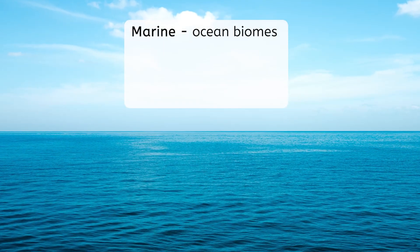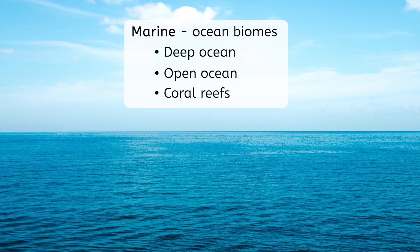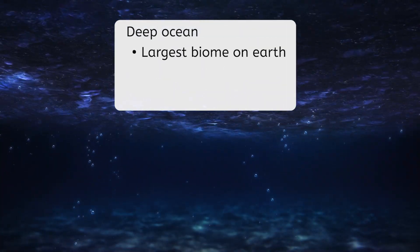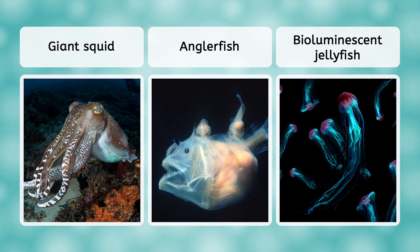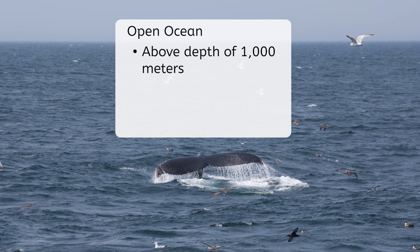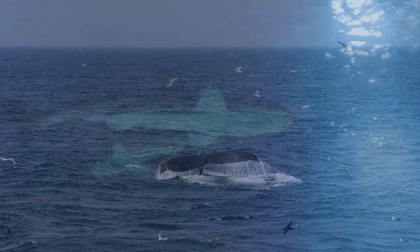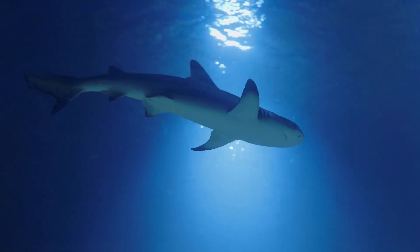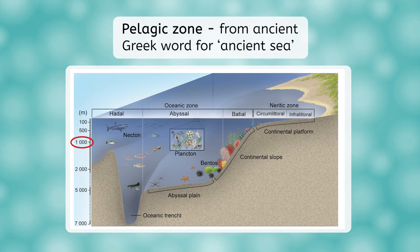The other aquatic ecosystems are marine and encompass the oceans. Some major biomes here are the deep ocean, open ocean, and coral reefs. The deep ocean is the largest biome on Earth, covering 60% of the surface, but it's a cold, dark world with no photosynthesis. The organisms found here look rather bizarre: giant squid, anglerfish, and bioluminescent creatures. In the open ocean, above a depth of 1,000 meters, we find much more diversity of life, because sunlight can penetrate these shallow waters and allow for photosynthesis. Not only does this result in the production of about half of the world's oxygen, but it provides a solid base for the food webs here. This is also known as the pelagic zone, the word pelagic coming from an ancient Greek word for open sea.